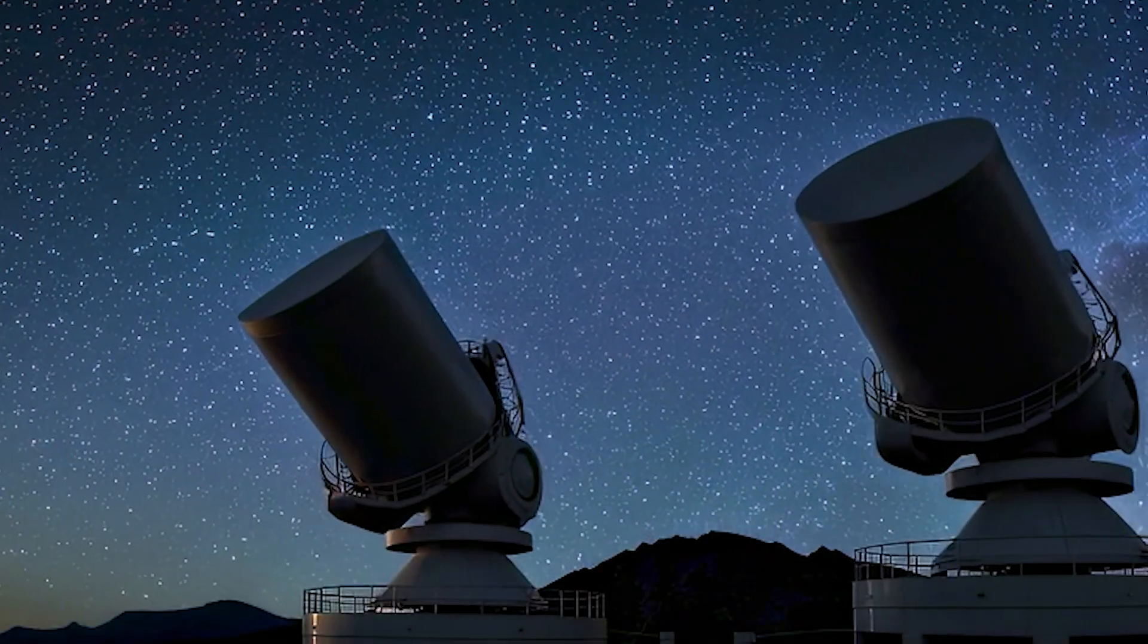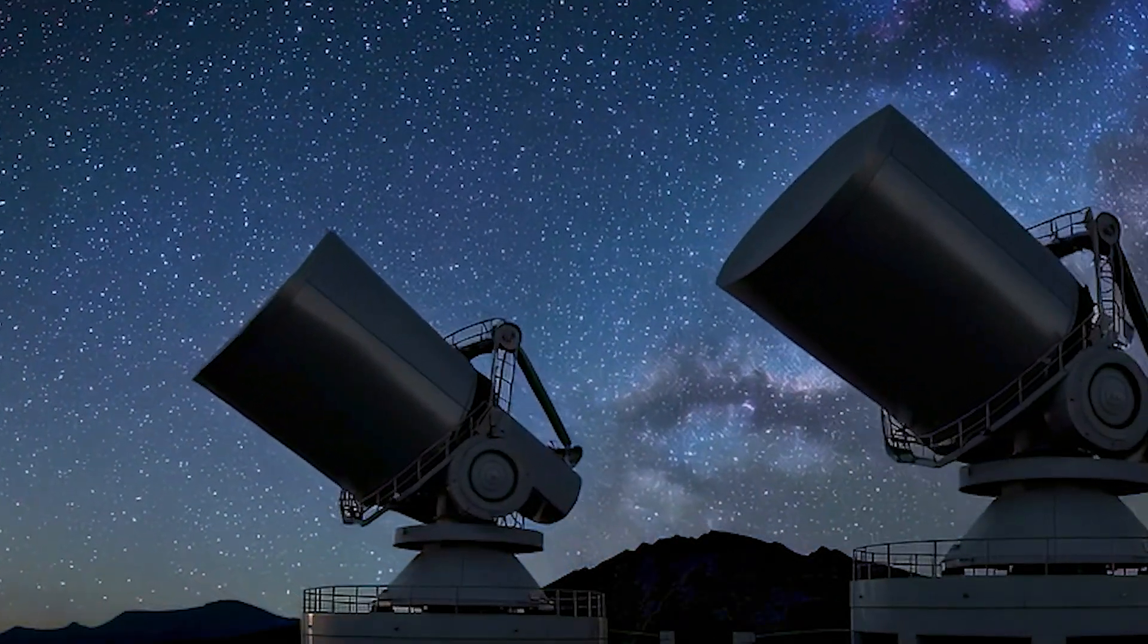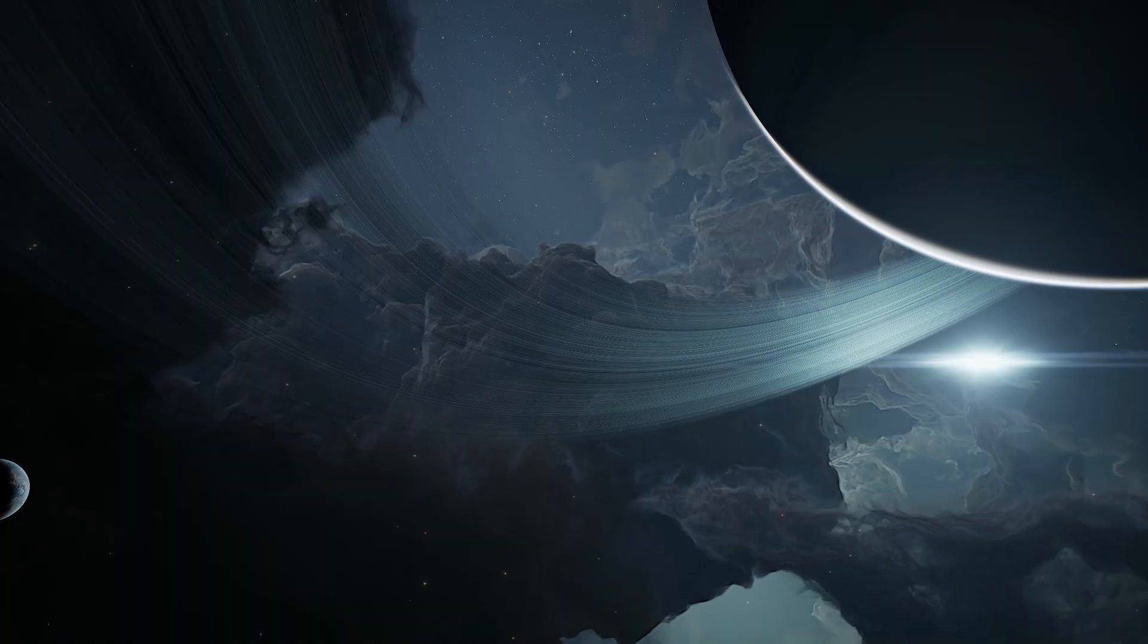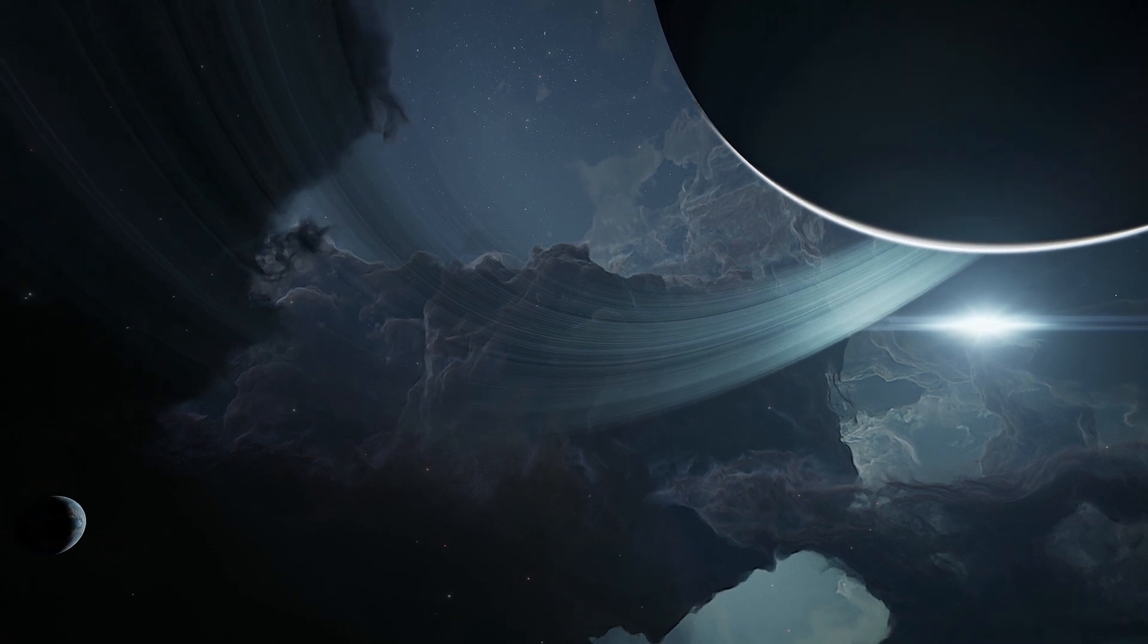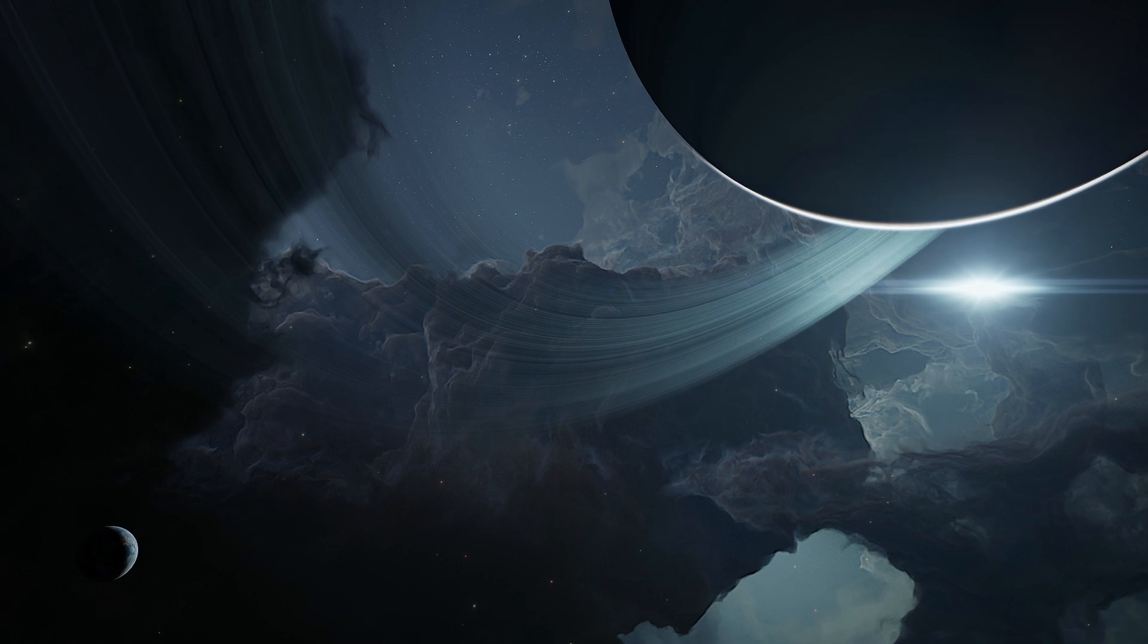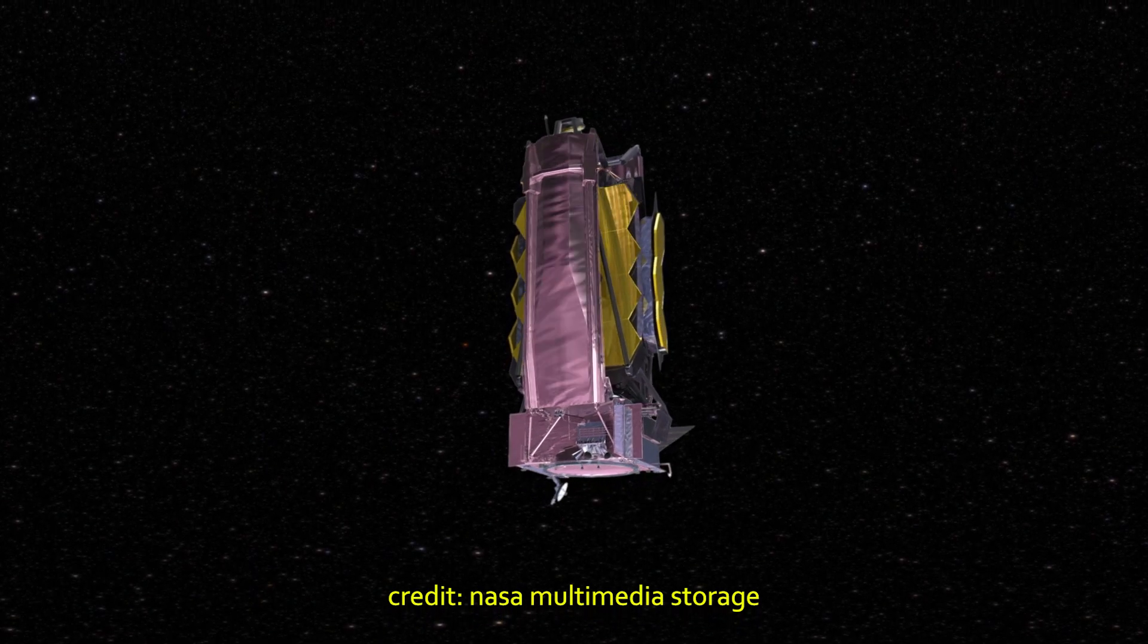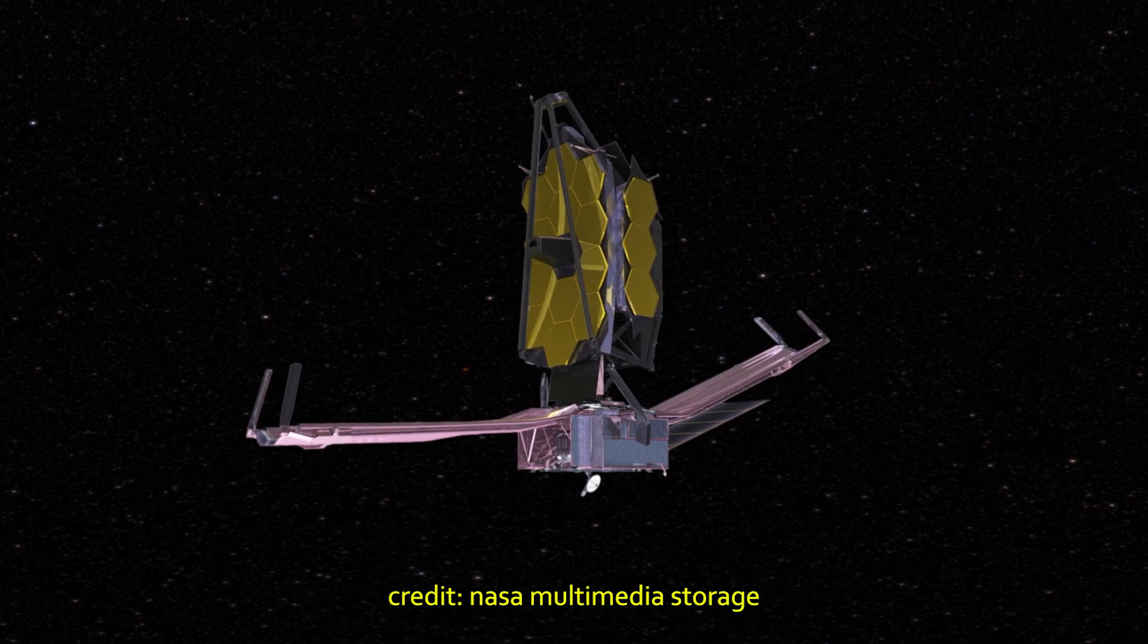When Betelgeuse finally goes, it won't just be a show for stargazers. It'll be a once-in-history opportunity for science to watch a star die, up close and in real time. Astronomers are already on alert. The second that flash hits the sky, telescopes around the world on mountaintops, in deserts, in orbit, will lock on, including the James Webb Space Telescope, ready to catch every detail across the spectrum from radio to gamma rays.